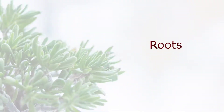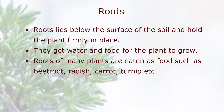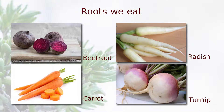Roots. Roots lie below the surface of the soil and hold the plant firmly in place. They get water and food for the plant to grow. Roots of many plants are eaten as food, such as beetroot, radish, carrot, and turnip.